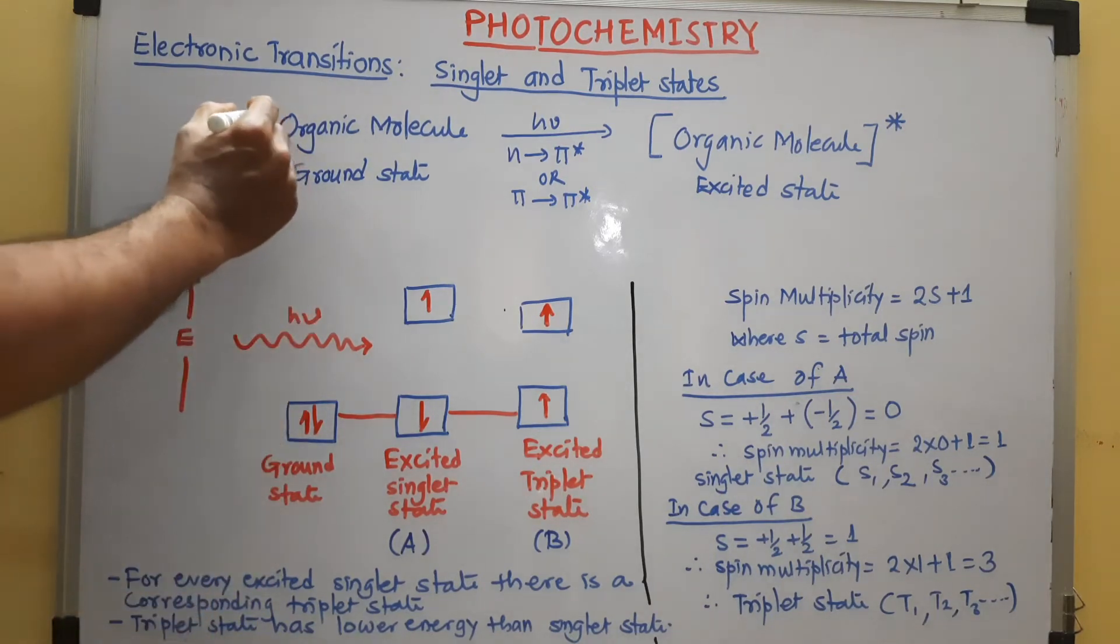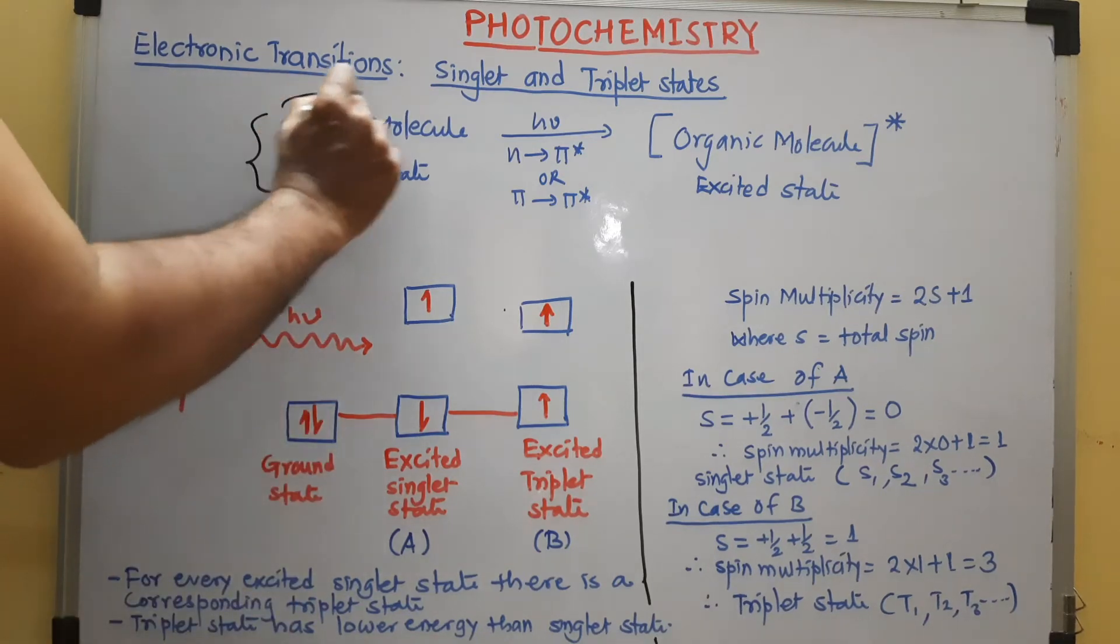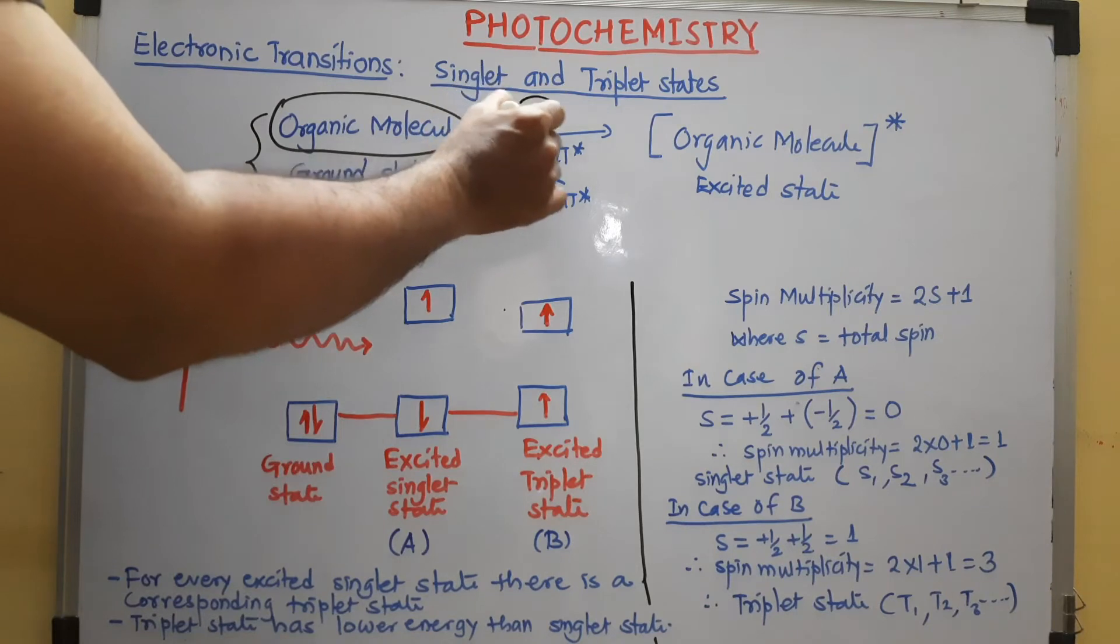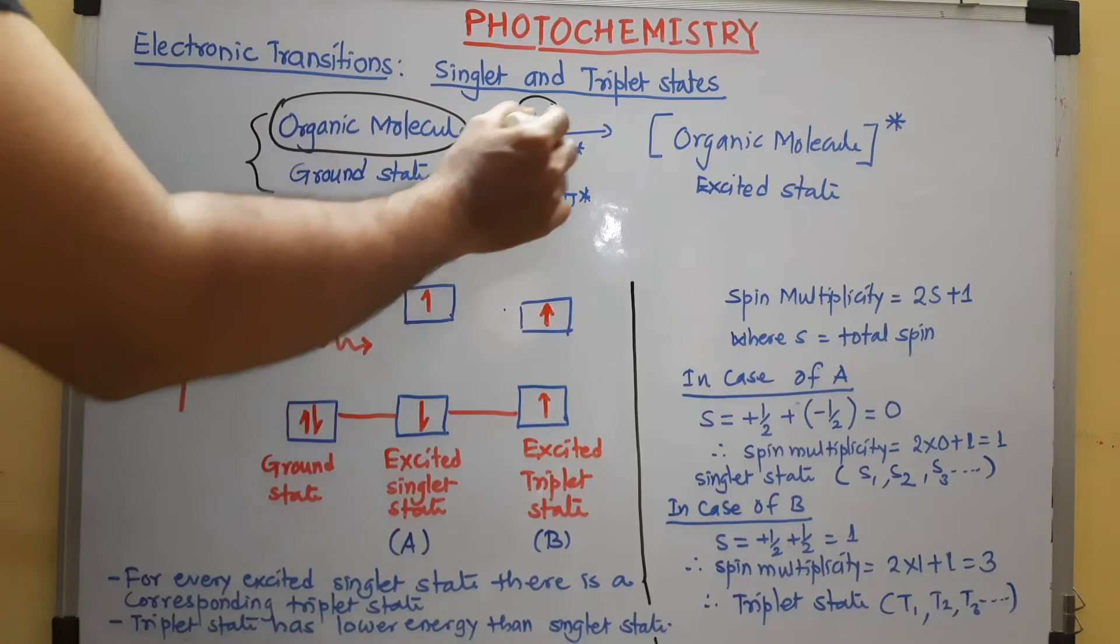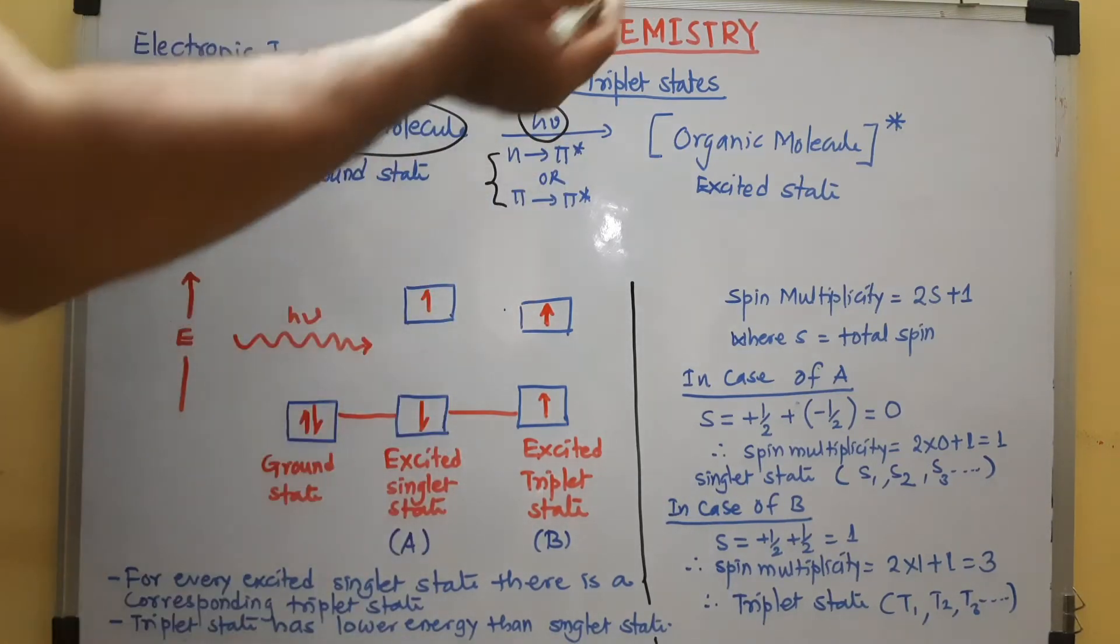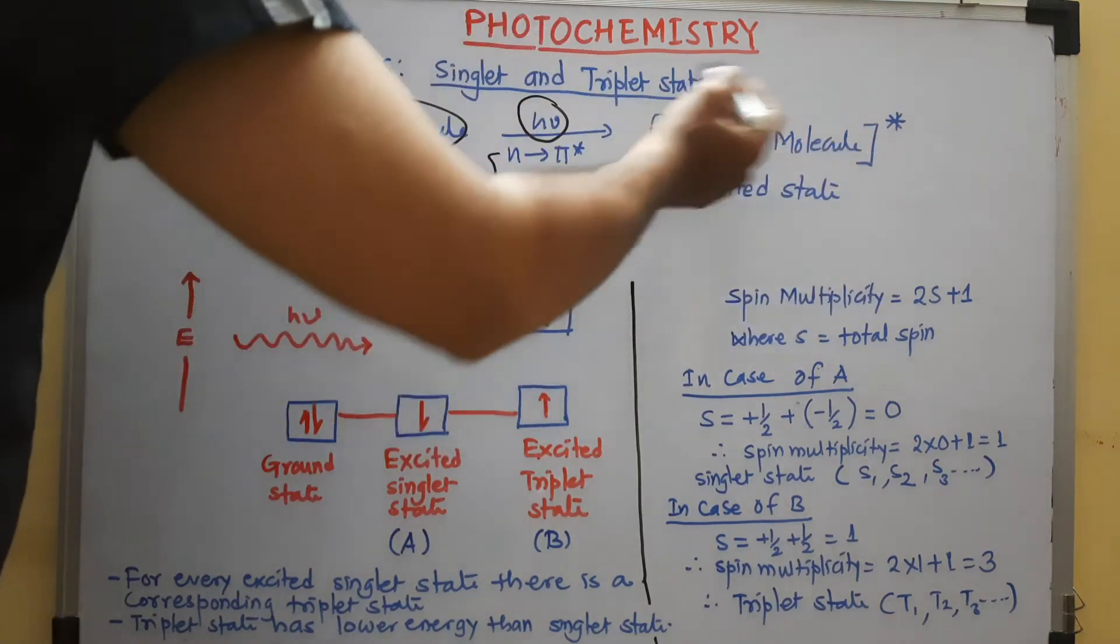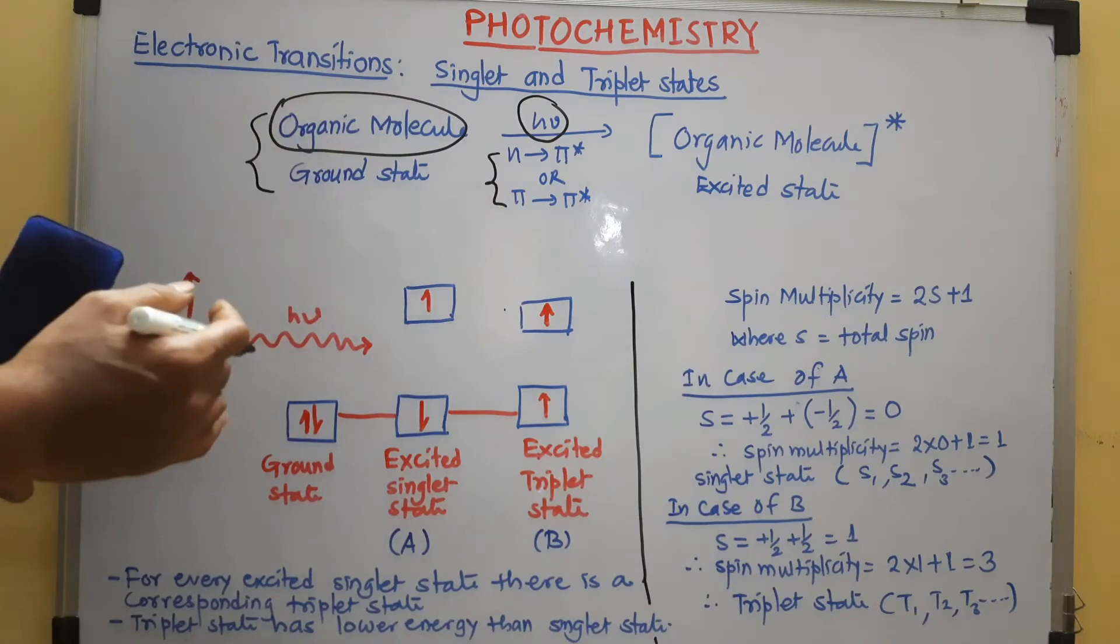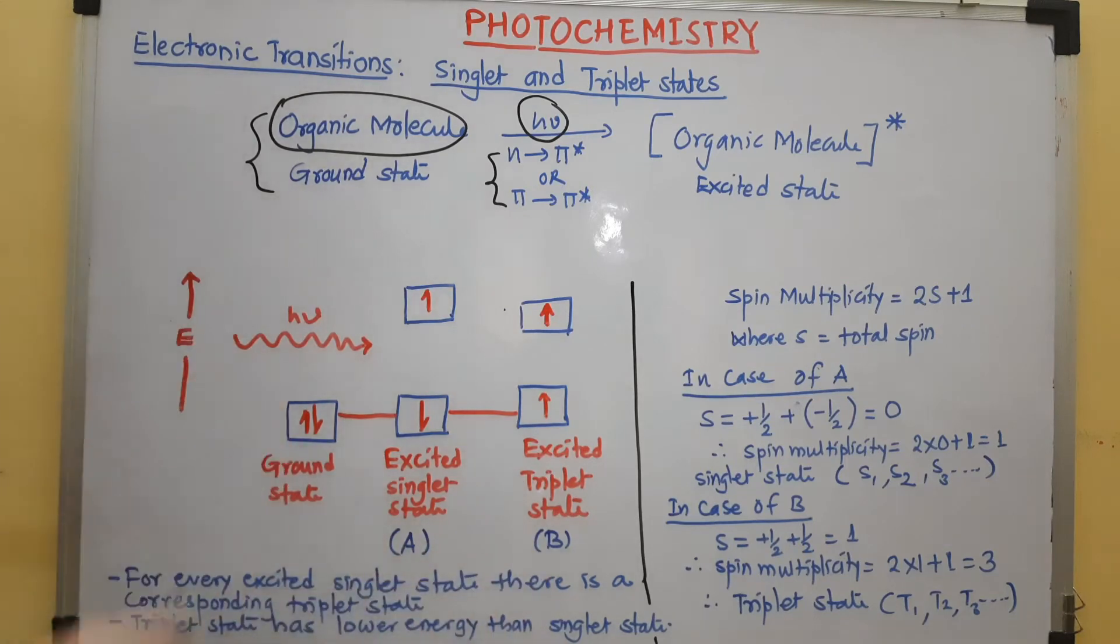We have discussed in previous video that the organic molecule, when irradiated with light of certain wavelength, can undergo either n to π* transition or π to π* transition. Then, that molecule is called molecule in excited state. So, what actually happens during that excitation, that is given here in this diagram.